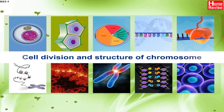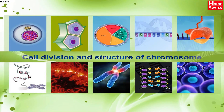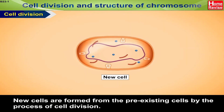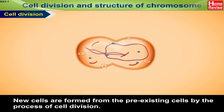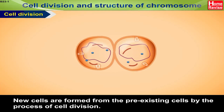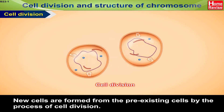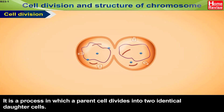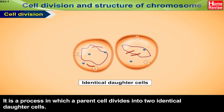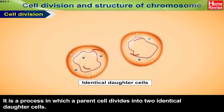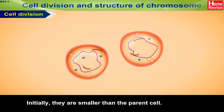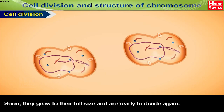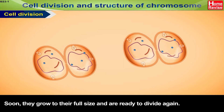Cell Division and Structure of Chromosome. New cells are formed from pre-existing cells by the process of cell division. It is a process in which a parent cell divides into two identical daughter cells. Initially, they are smaller than the parent cell, but soon they grow to their full size and are ready to divide again.